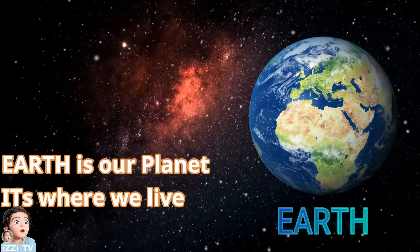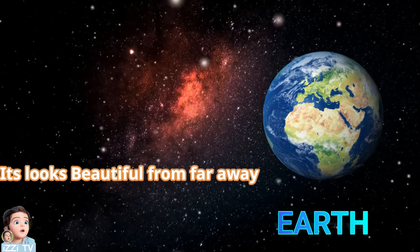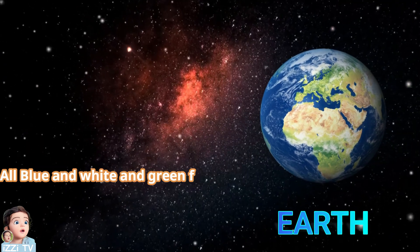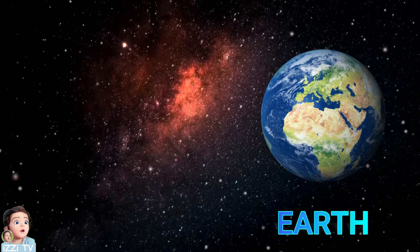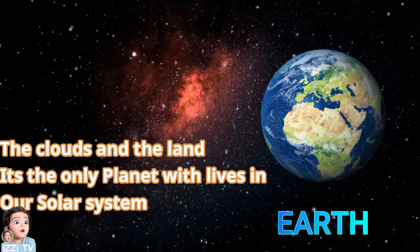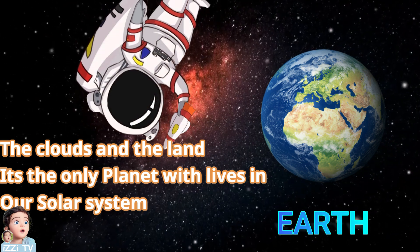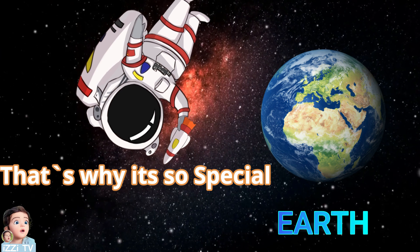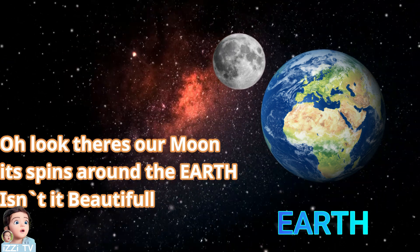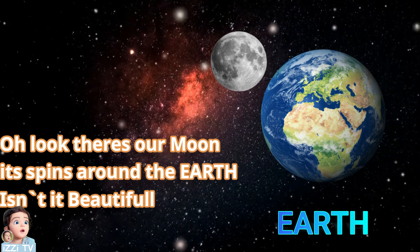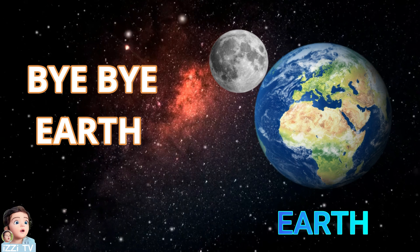Earth is our planet. It's where we live. It looks beautiful from far away, all blue and white and green from the sea, the clouds and the land. It's the only planet with life in our solar system. That's why it's so special. Oh look! There's our moon! It spins around the Earth. Isn't it beautiful? Bye bye Earth!